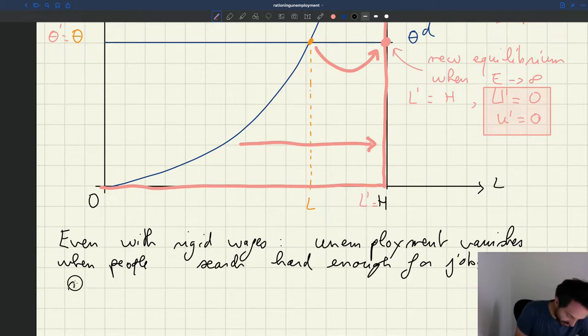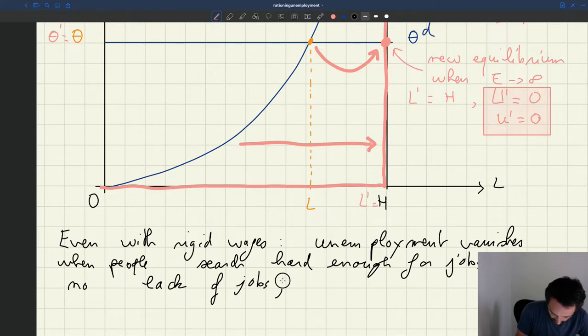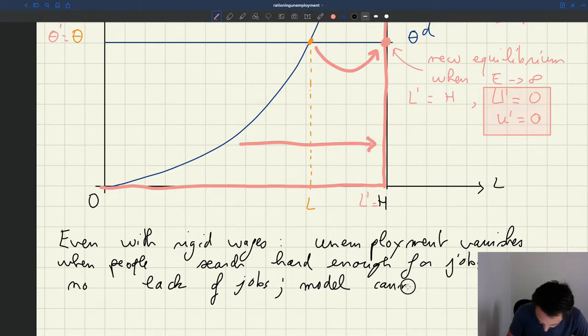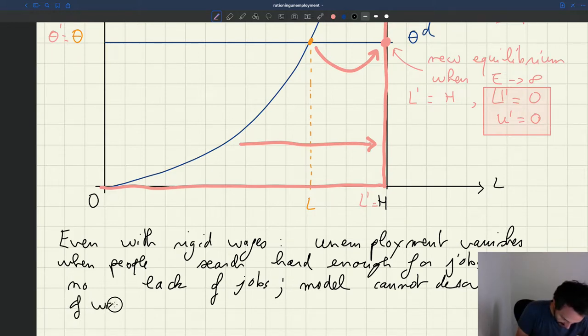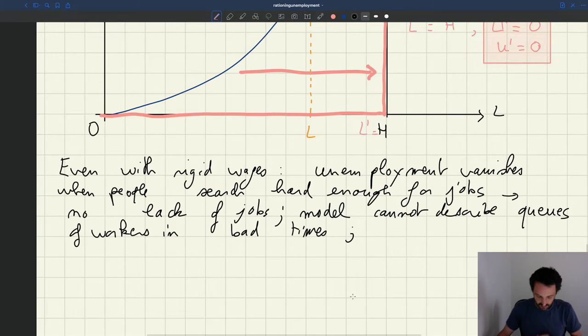And as a result, there is no lack of jobs in the model. The model cannot describe queues of workers in bad times.